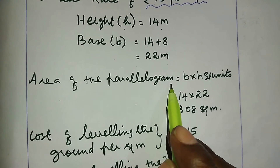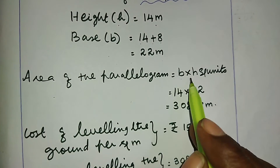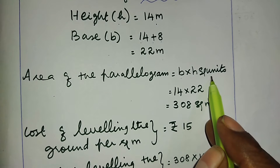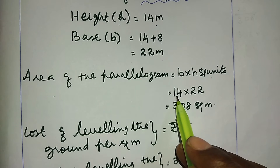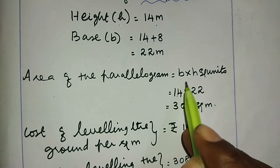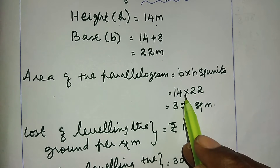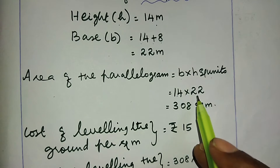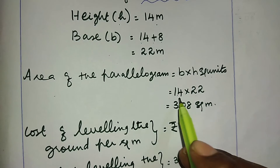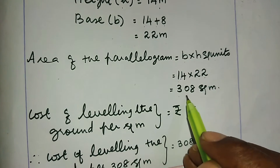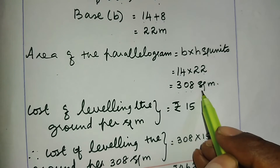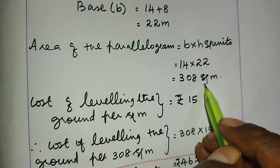The area of the parallelogram is equal to base into height. Base is 14 meters, height is 22 meters. So the area is 14 multiplied by 22, which equals 308 square meters.